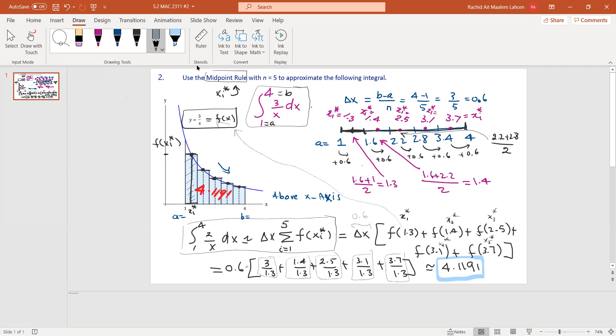Then we get 4.1191, and that means this blue area that we're trying to find and calculate is about 4.1191.